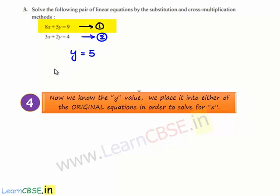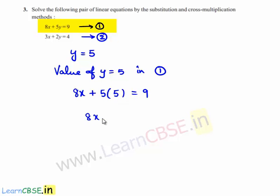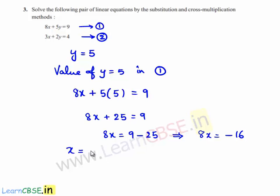Now let us substitute the value of y, which is 5, back into equation 1. We get 8x plus 5 times 5 is equal to 9, so 8x plus 25 is equal to 9. Therefore 8x is equal to 9 minus 25, which gives 8x is equal to minus 16. Therefore x is equal to minus 16 divided by 8, which is nothing but minus 2. So x is equal to minus 2 and y is equal to 5.